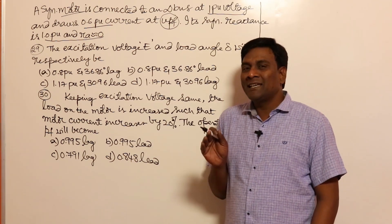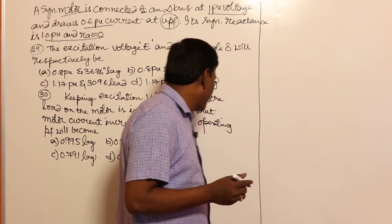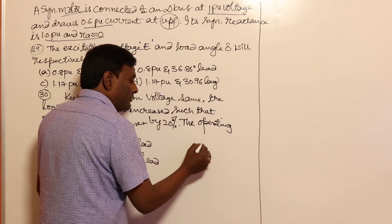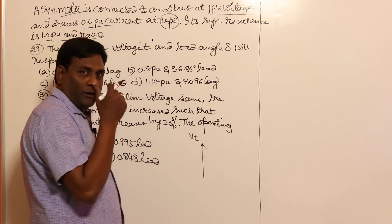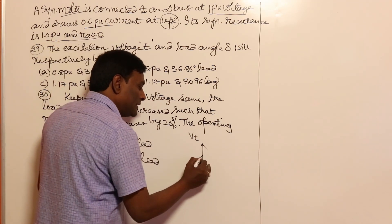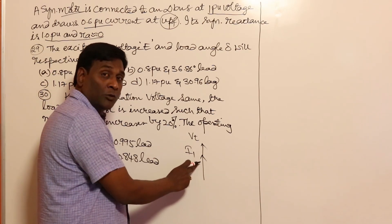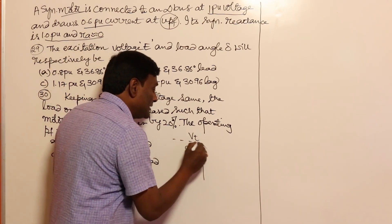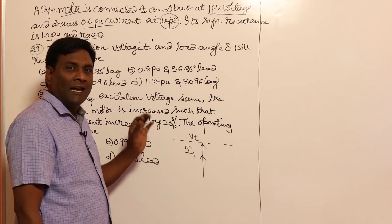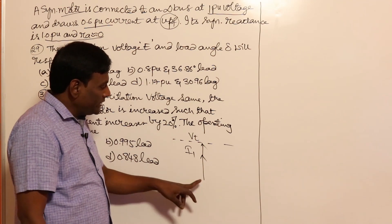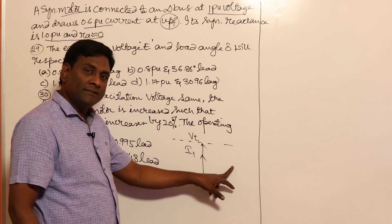First, should the excitation voltage be more than one or less than one? Let us draw a small phasor diagram. This is VT. In the first case, I1 is in line with VT. The IXs drop should be 90 degrees with respect to I1, and VT plus or minus that gives IXs drop. Now, EF should lead or lag VT — that will be decided by whether it is a motor or generator.